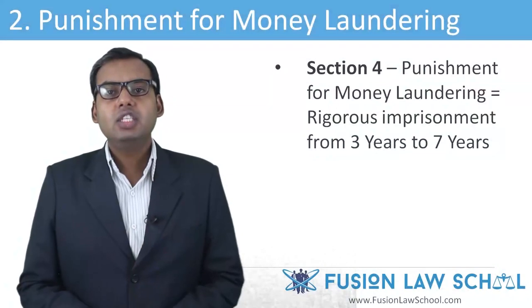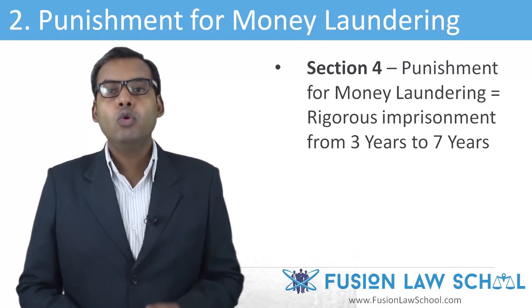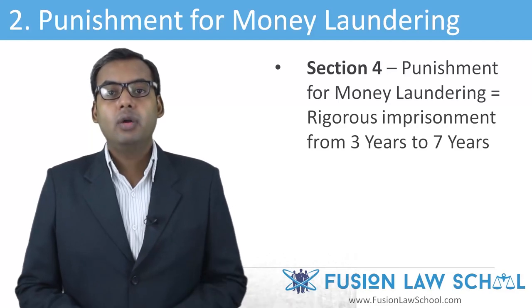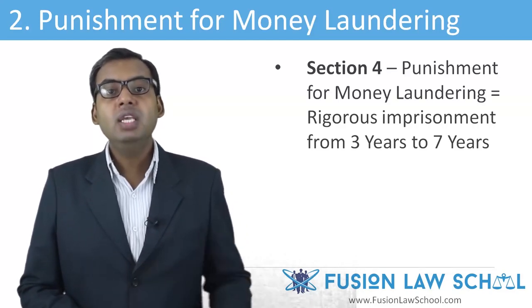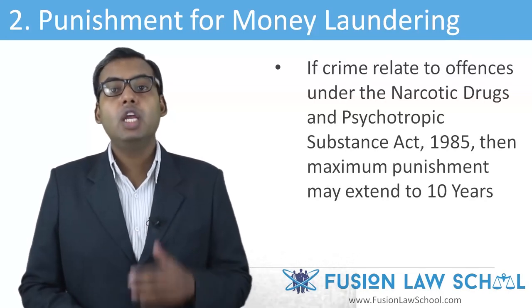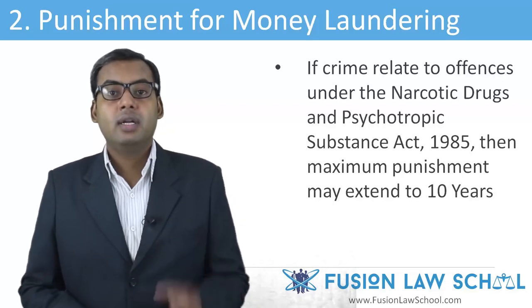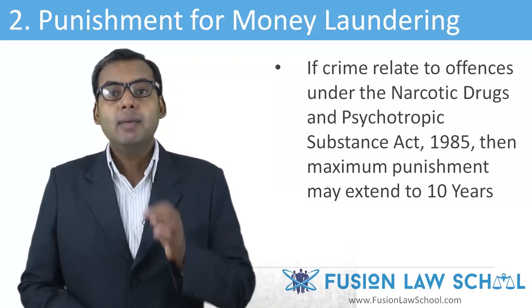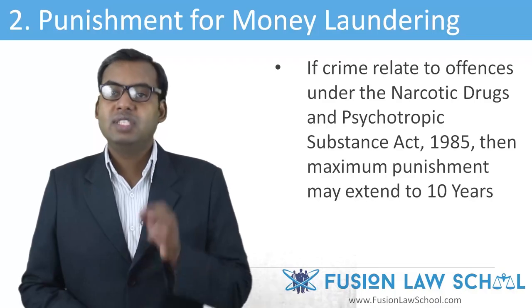The second feature of PMLA is punishment for money laundering. Under Section 4 of PMLA, any person found guilty of money laundering shall be punishable with rigorous imprisonment from 3 years to 7 years. Where the proceeds of crime relate to offenses under the Narcotic Drugs and Psychotropic Substances Act 1985, the maximum punishment may extend to 10 years instead of 7 years.